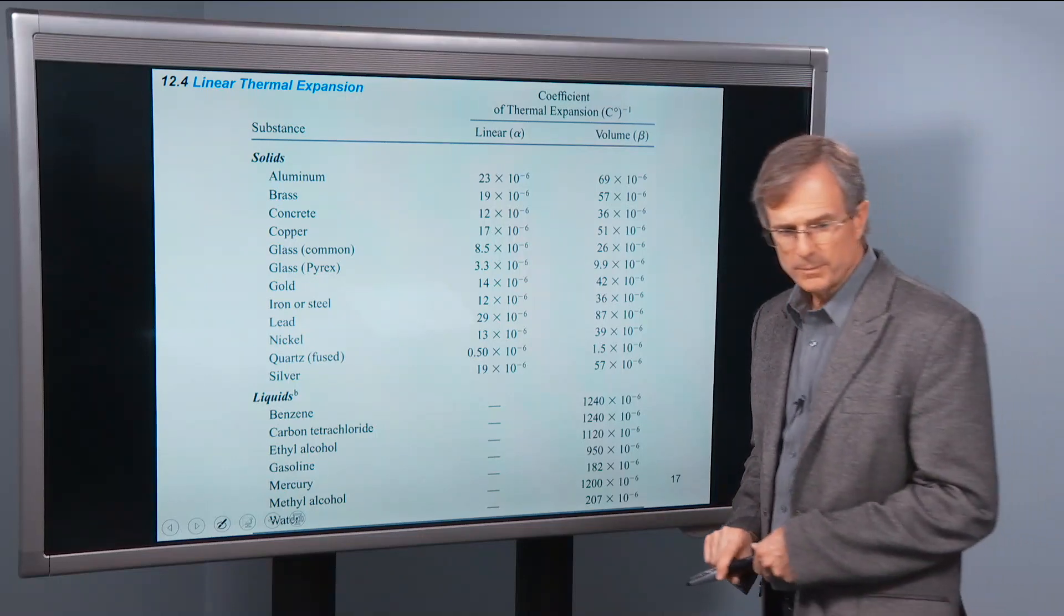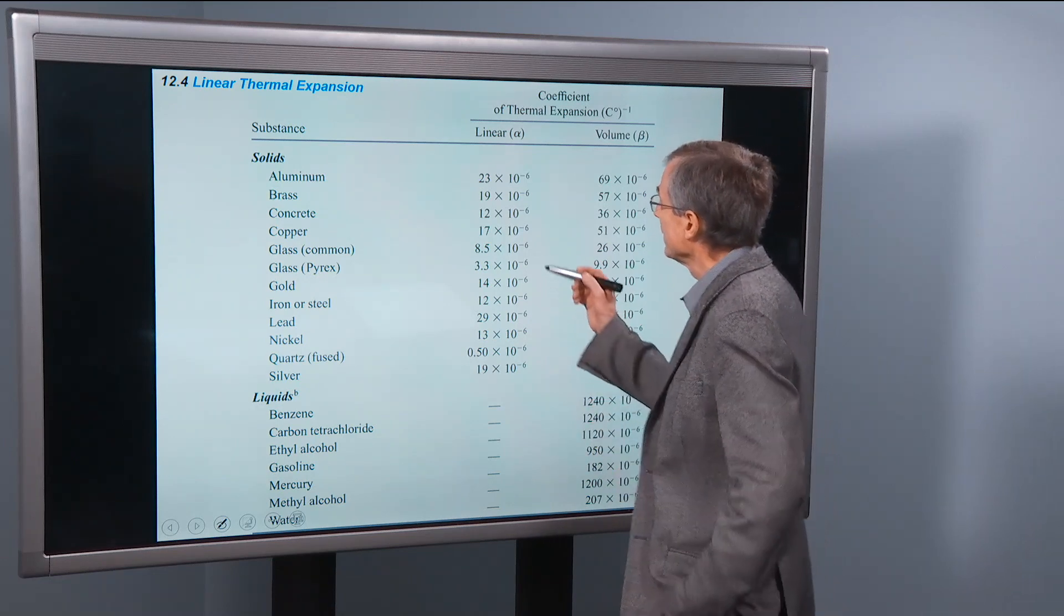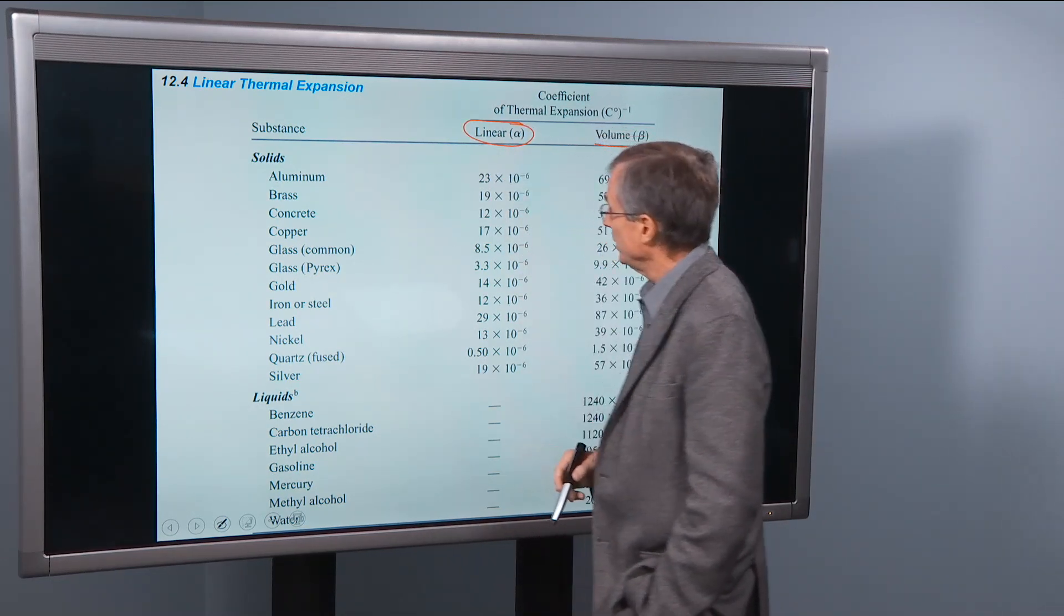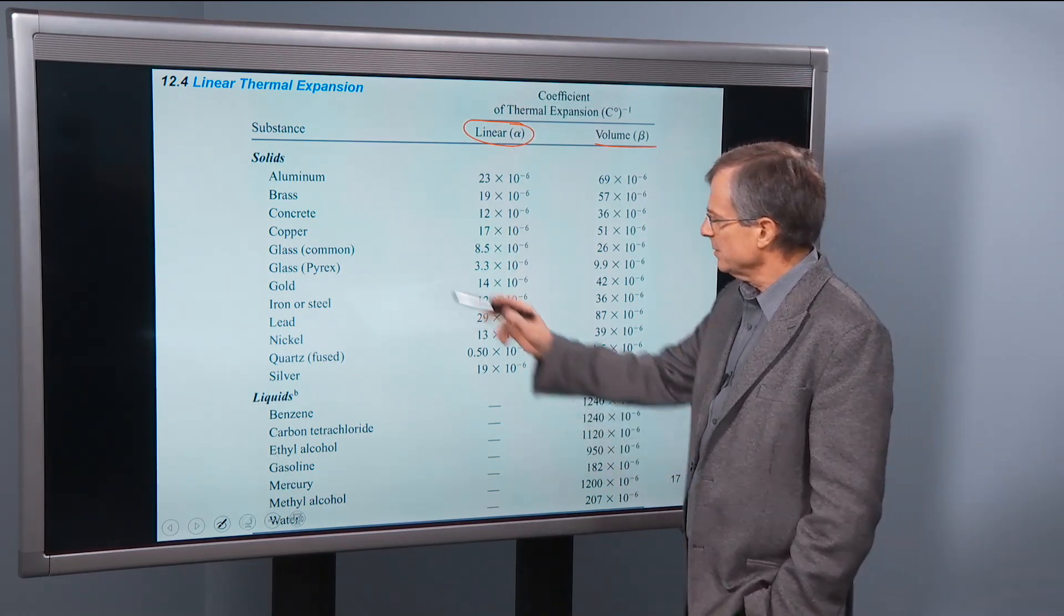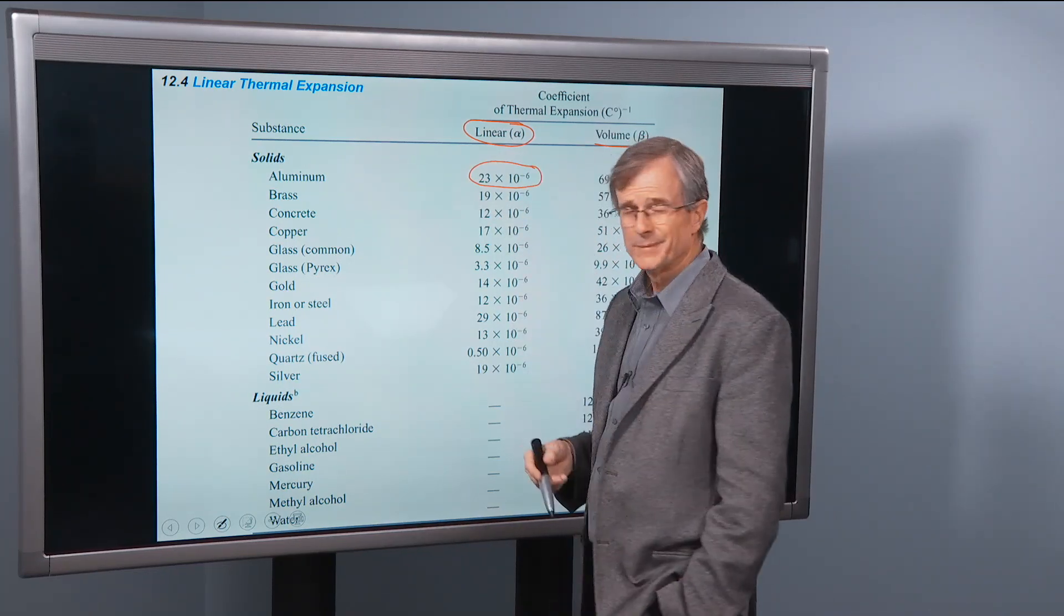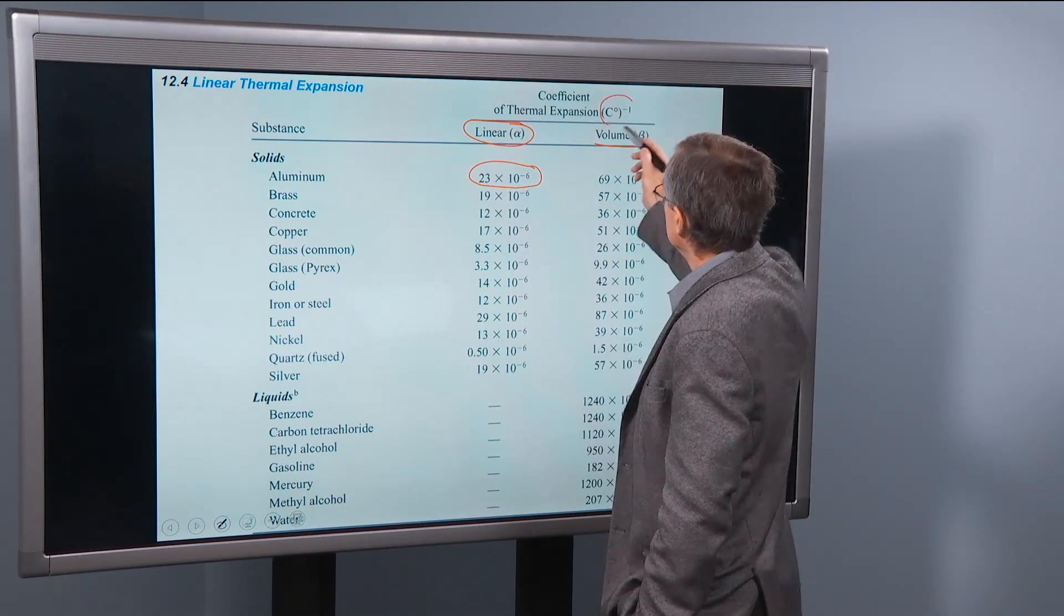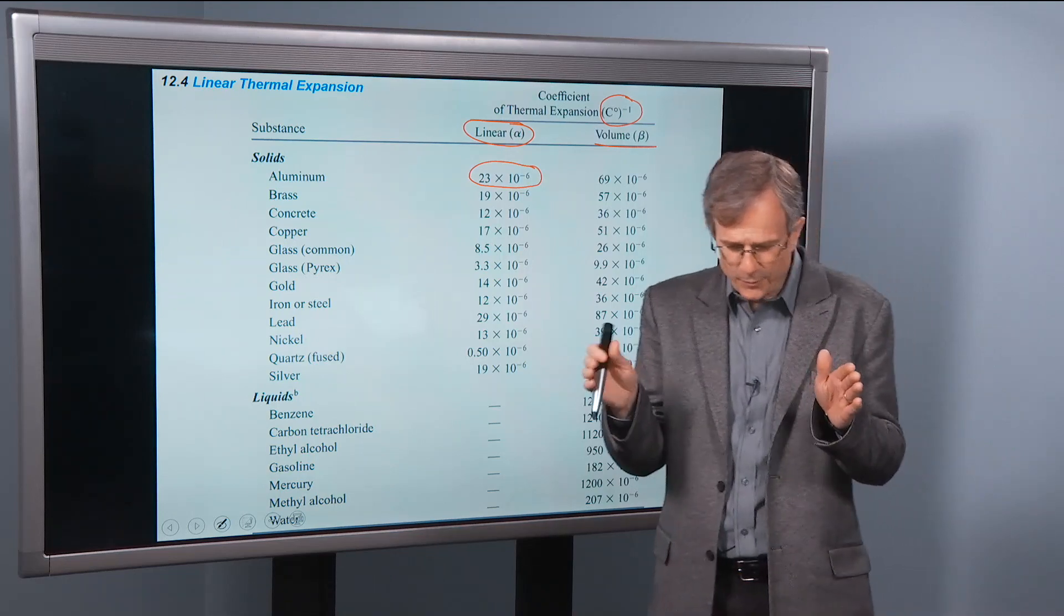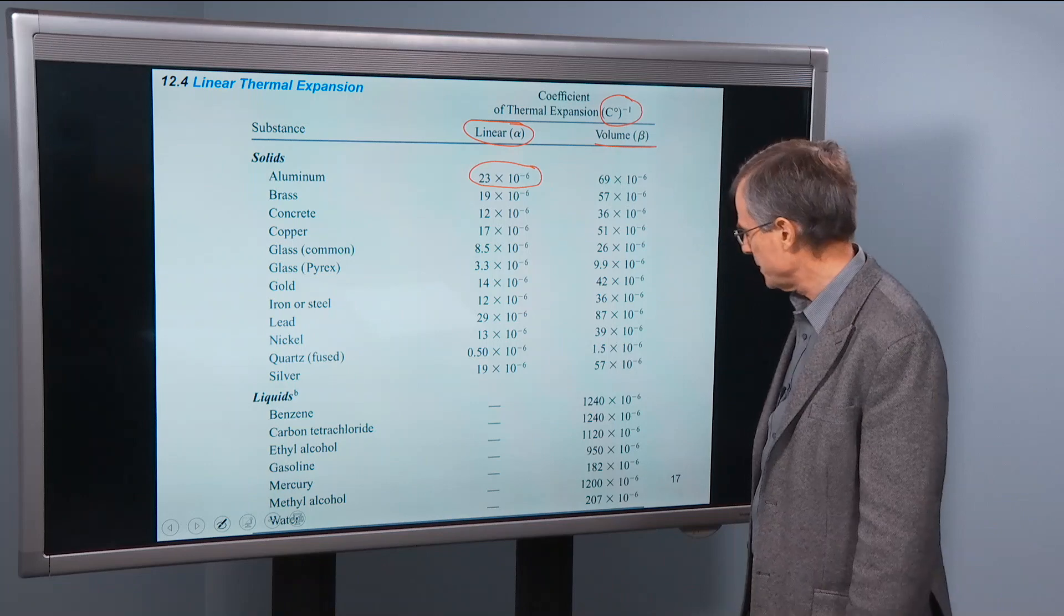Here are some coefficients of thermal expansion, linear expansion coefficients. We're going to talk about volume expansion coefficient in just a second, but for now, linear. So for most objects, these coefficients are quite small, 23 times 10 to the minus 6, inverse degrees C. That doesn't make for much of an expansion for short objects, but for long objects, you definitely can get an expansion.